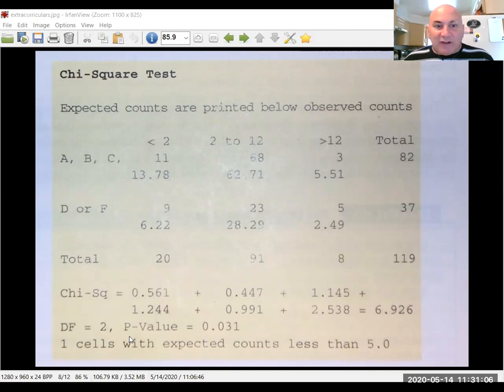Minitab gives us a warning. There's one cell with an expected count less than five. But remember our rule of thumb: as long as all our expected counts are greater than one, and no more than one in five is less than five, then the analysis will still be okay. One in five would be 20%, and this is one out of six cells, which is only a little under 17%. So we're still good.